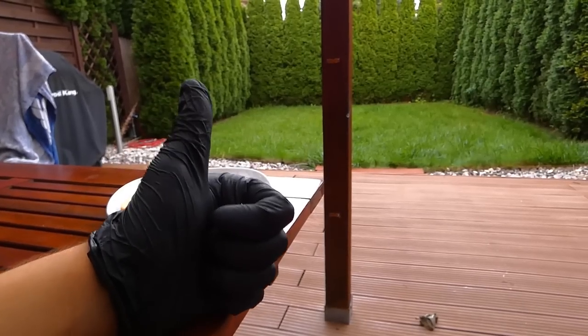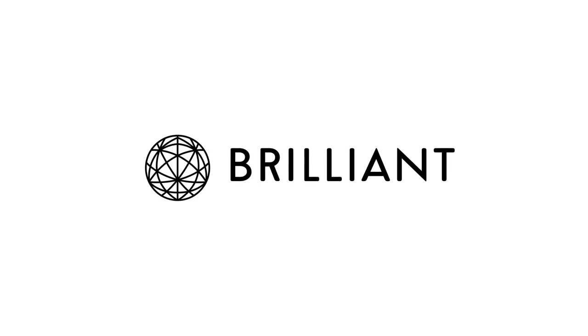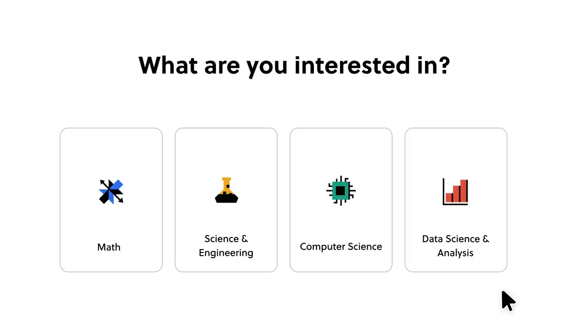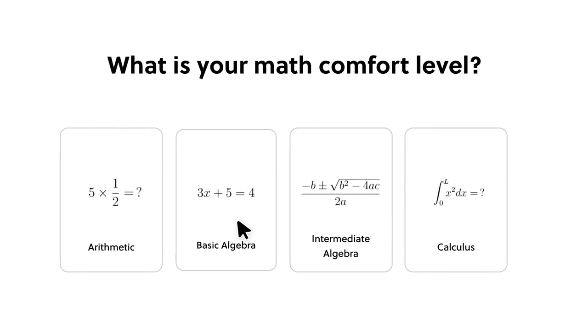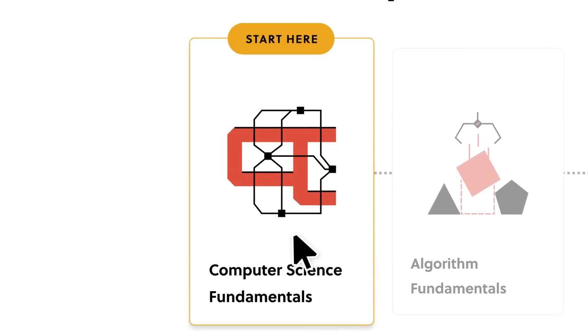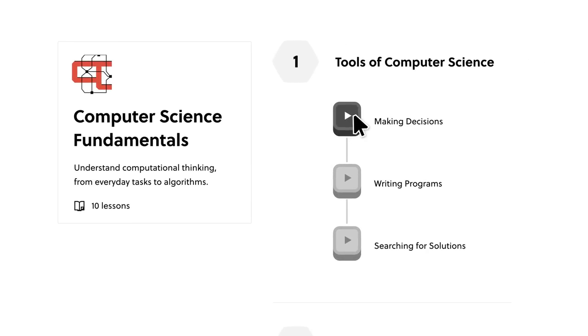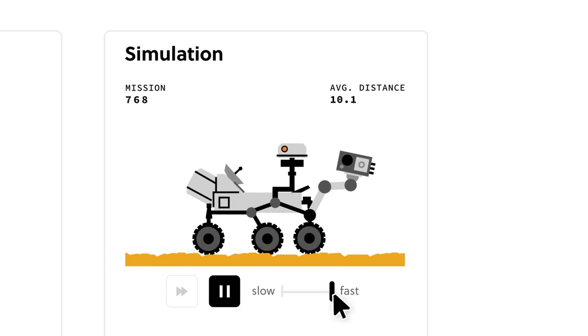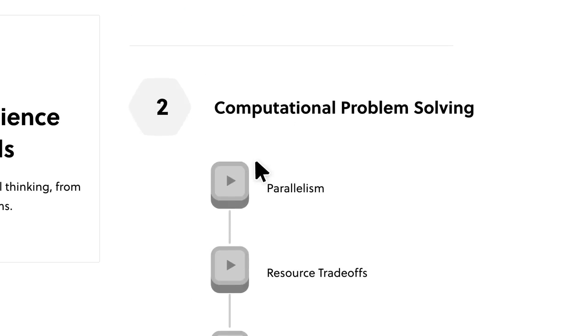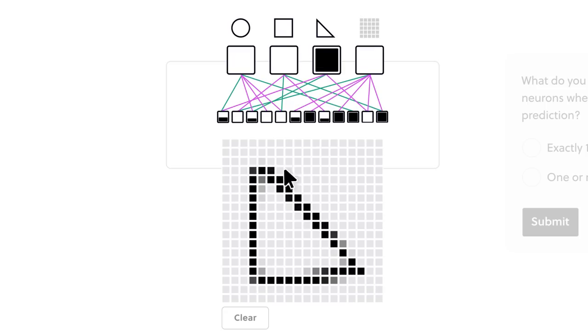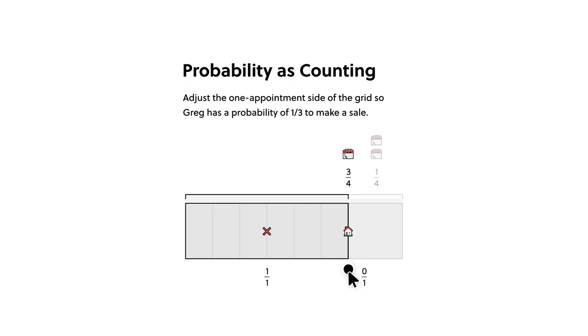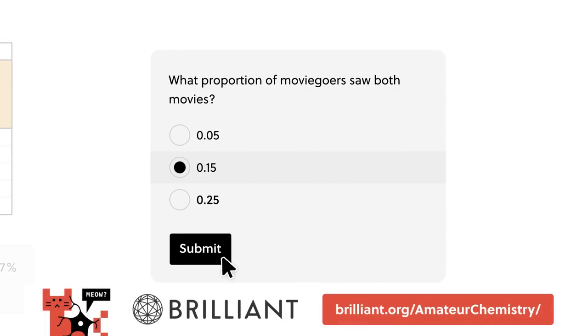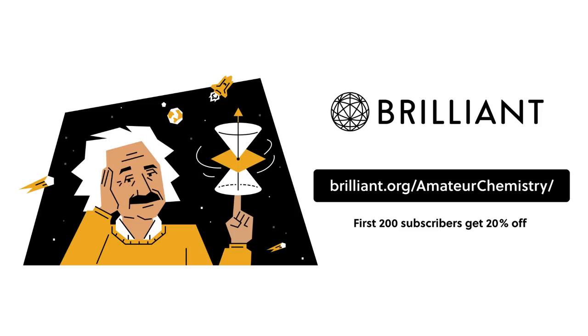Also, I learned a lot while making this video, and thanks to today's sponsor, Brilliant, you can also learn a lot of stuff in a fun and easy way. Brilliant offers amazing courses in math, data, and computer science, along with much more. They have a very fun and hands-on way of learning that I personally use to expand my skills. Their courses consist of thousands of interactive lessons that cover basic and advanced topics, made in a way that lets you learn at your own pace. To try everything that Brilliant has to offer for free for a full 30 days, you can visit brilliant.org/amateurchemistry or just click the link in the description. The first 200 of you to click the link will get 20% off Brilliant's annual premium subscription.